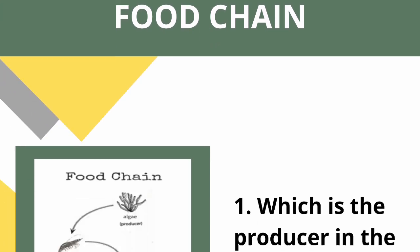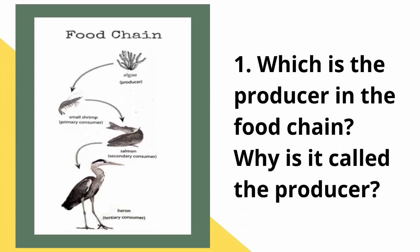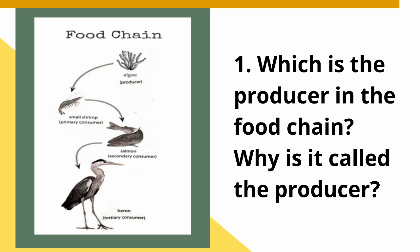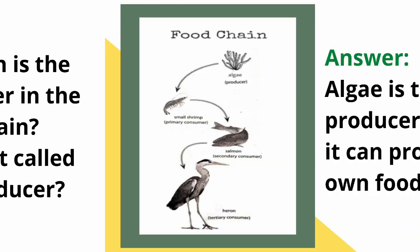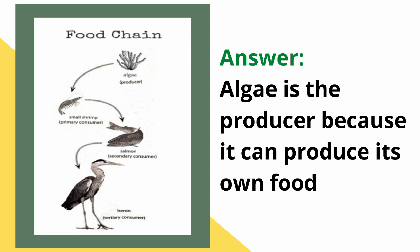Let's try this out. Here's an activity for you. Look at the picture and study the food chain and food web, then answer the following questions. Question number one: which is the producer in the food chain? Why is it called the producer? Answer: algae is the producer because it can produce its own food.